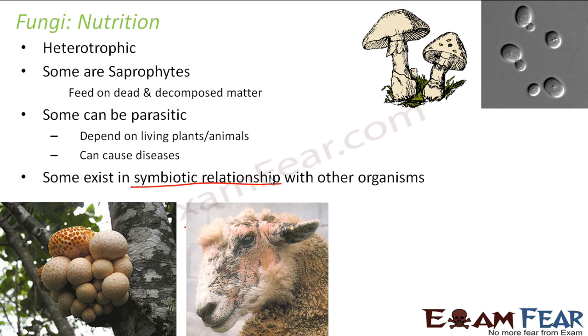To summarize: fungi can be heterotrophic by feeding on dead matter as saprophytes — examples are mushroom and yeast — they can be parasitic, or they can exist in a symbiotic relationship, the example being lichen. Now let us talk about symbiosis in a little more detail.